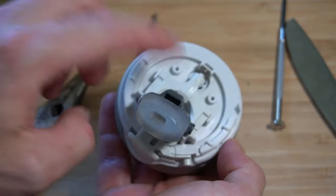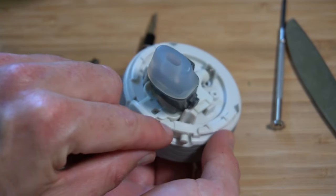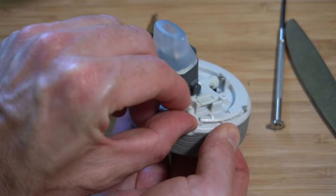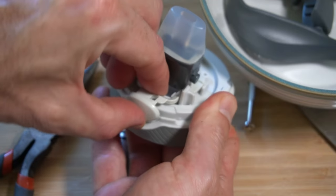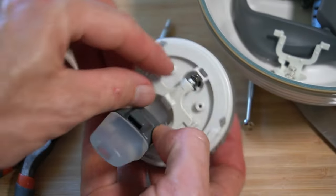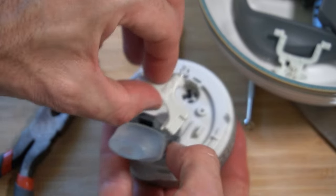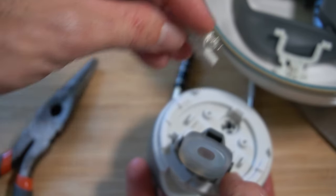Next, we want to pull apart this little push button, which extends back there as well as the locking mechanism so we don't lose these parts. Now with this push button, be careful because underneath there's a little spring, which you can easily lose. And the same with the back part here, there's a little spring, which you can easily lose.